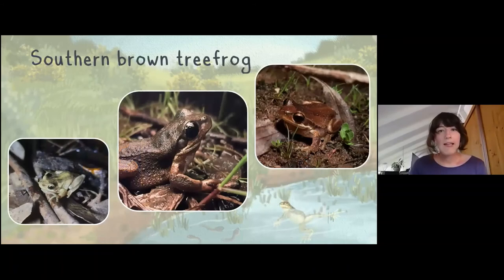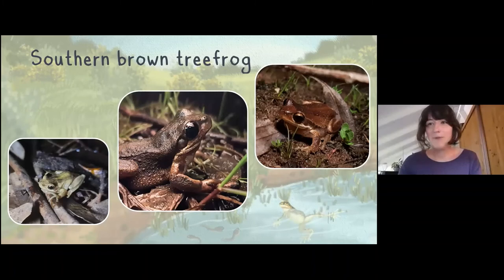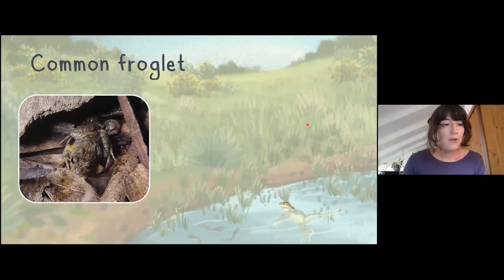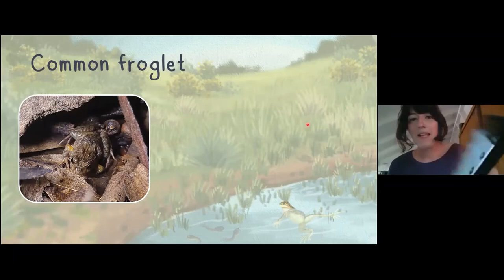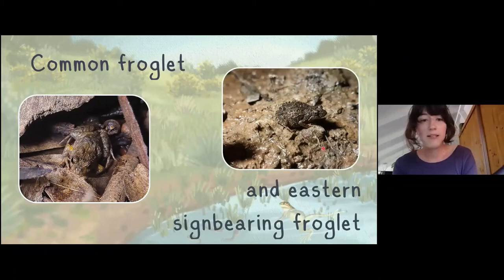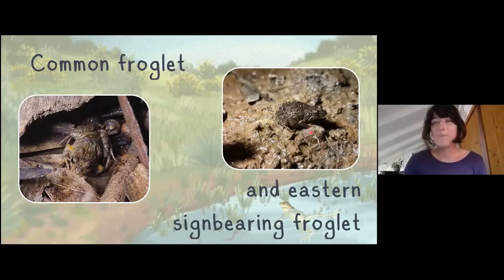Some common species to become familiar with: the southern brown tree frog has a characteristic dark stripe through the eye and a little white cheek, and its sound fills the night in a lot of places. The common froglet is easy to hear — sounds a bit like a cricket — and it has a very closely related cousin called the eastern sign-bearing froglet, which looks almost identical but sounds very different with a little squashed squeak sound.